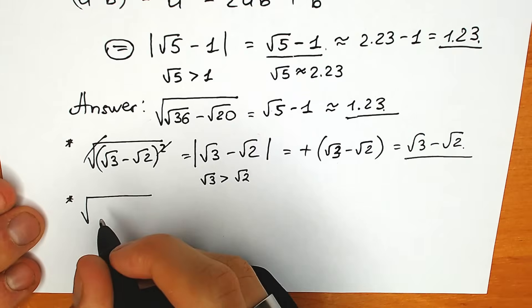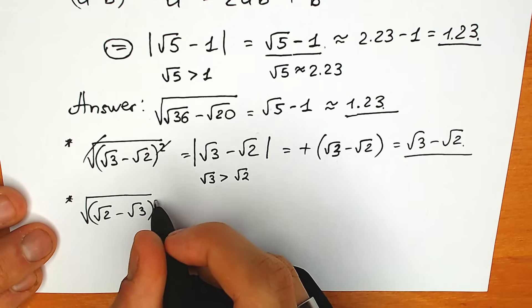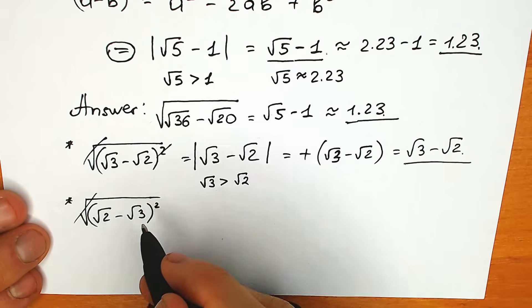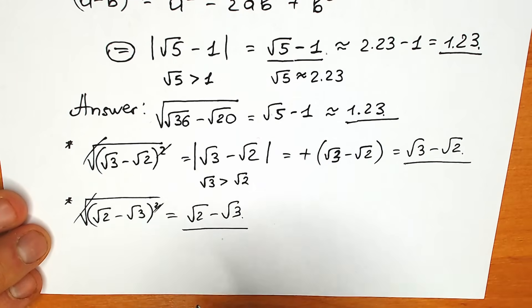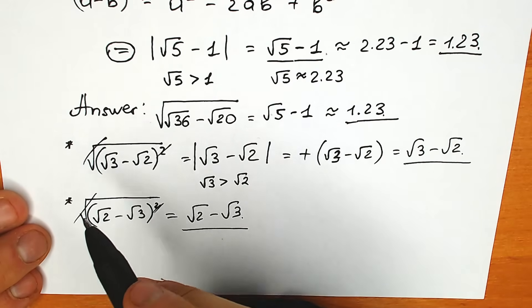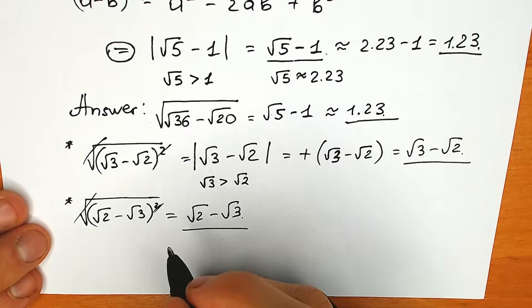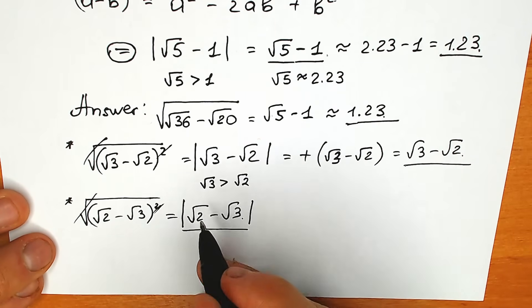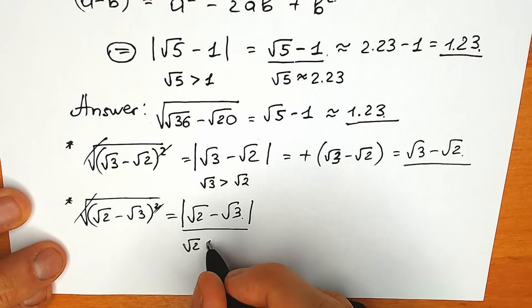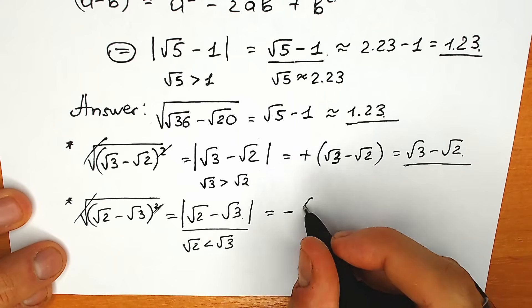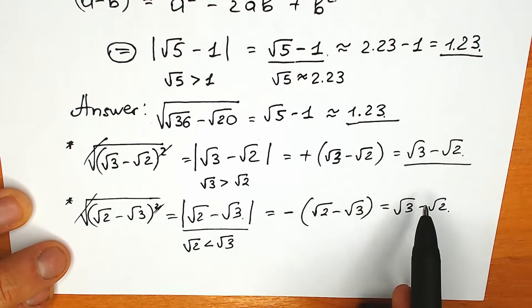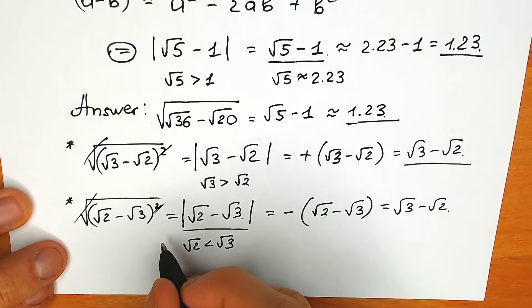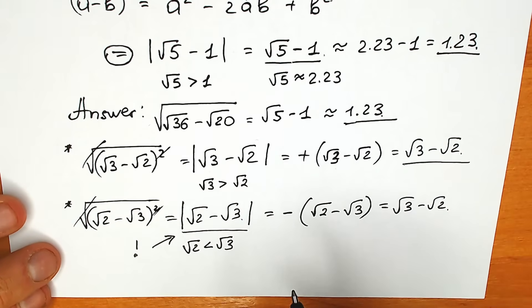Now consider the second case: square root of (√2 − √3) squared. A lot of students cancel it and write √2 − √3, which is the wrong answer. You need to put absolute value brackets. Since √2 is less than √3, the expression √2 − √3 is negative, so you put a minus sign: −(√2 − √3) = √3 − √2. The same final answer, but derived correctly.